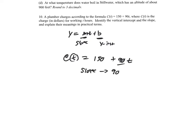The slope is 90. In practical terms, since it's multiplied by hours worked, 90 represents dollars per hour — the amount charged per hour of work. The vertical intercept is 150. Even with zero hours worked, the charge is still 150, so it's a base charge or fixed fee before any work begins.